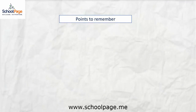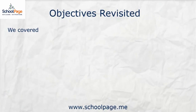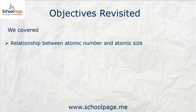Let's do a quick recap of the points covered in this video. We understood that the atomic size always decreases along the period, because of the increased pull of the atomic nucleus towards the electrons. We also learned that the modern periodic table is called the long form periodic table. In this video you understood the relationship between the atomic number and atomic size.